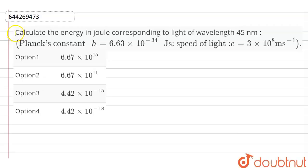Here is a question in which calculate the energy in Joules corresponding to light of wavelength 45 nanometers. The Planck constant is 6.63 × 10^-34 Joule seconds, and the speed of light is equal to 3 × 10^8 meters per second.